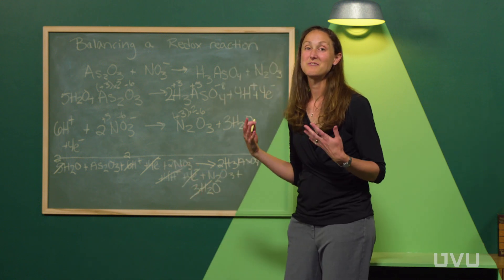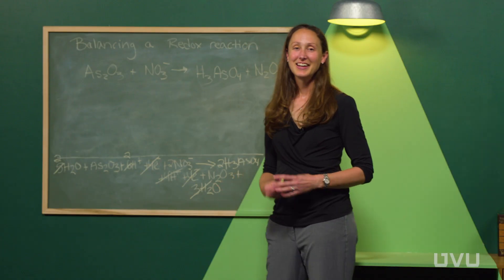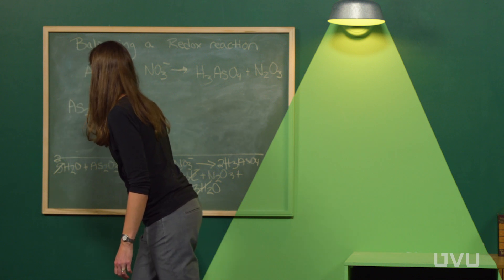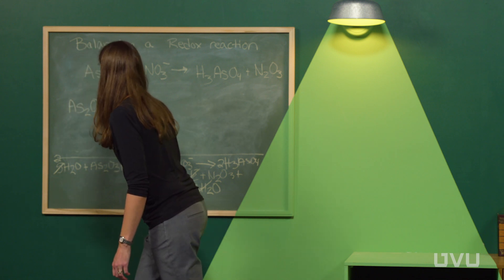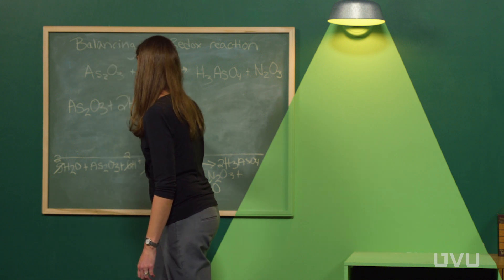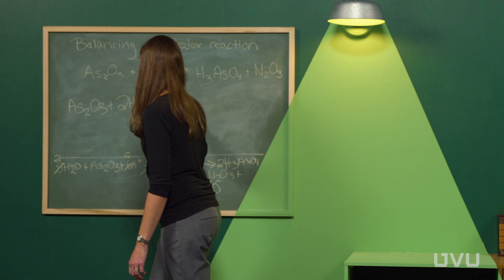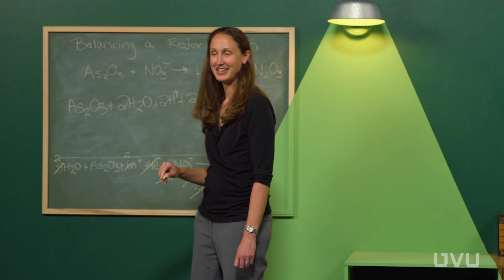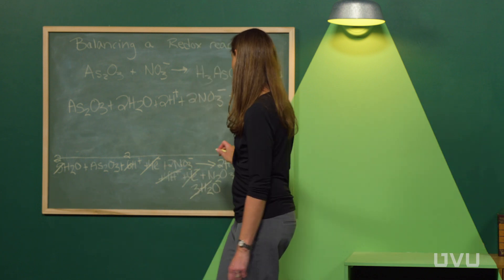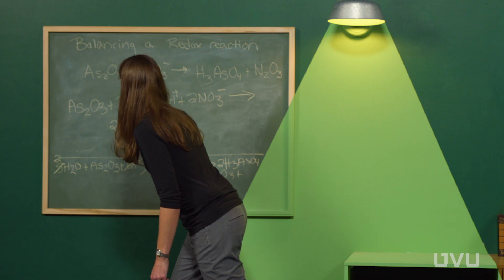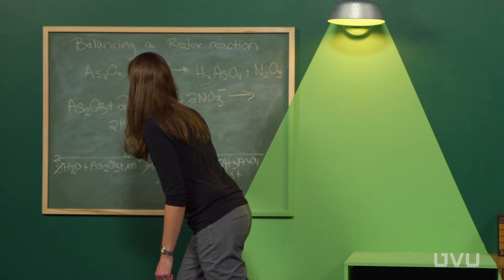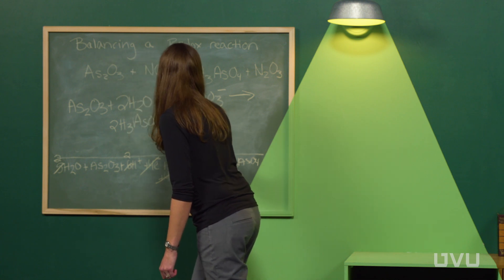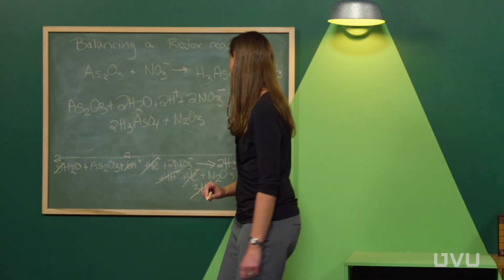Writing the final balanced reaction: the arsenic compound plus two waters plus two protons plus two nitrate ions goes to two arsenic acid molecules plus N2O3. That's the complete balanced redox reaction.